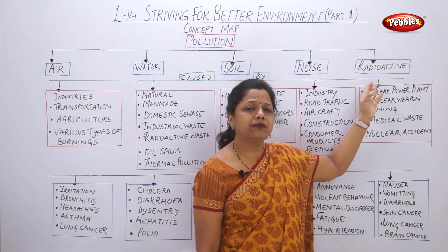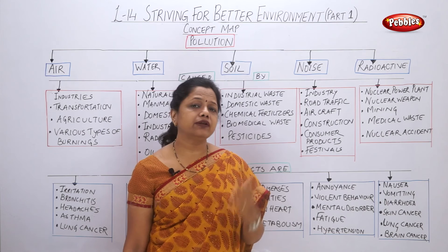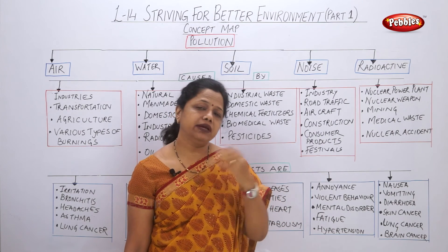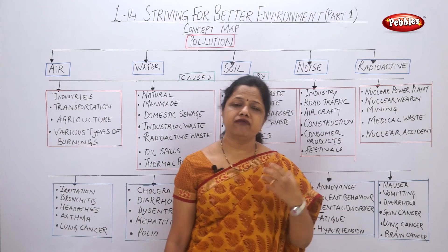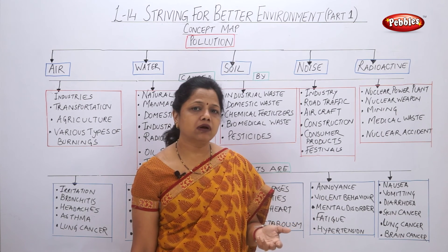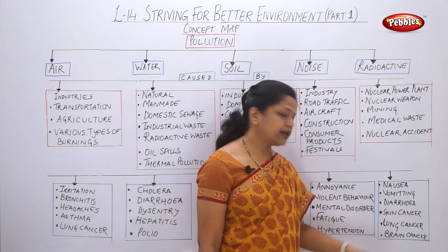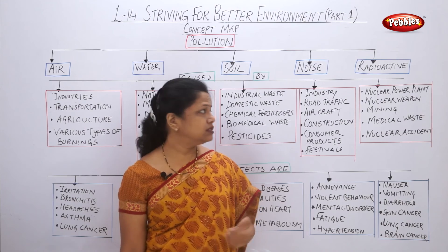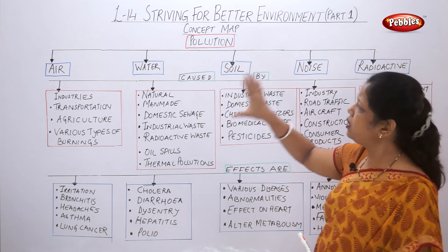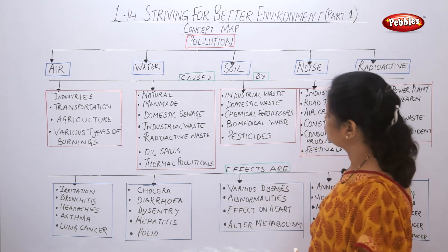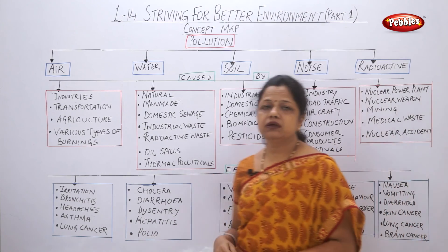Effects of radioactive pollution: if you are in the vicinity of a radioactive leakage, you may experience nausea — the feeling of vomiting — and diarrhea affecting your digestive system. In more serious cases, you may get different types of cancer: skin cancer, lung cancer, and brain cancer. These are very serious effects of radioactive pollution. This flowchart shows the whole lesson 'Striving for a Better Environment' in short. Go through it and you can easily answer questions on the concept of pollution. This was all about lesson number 14.